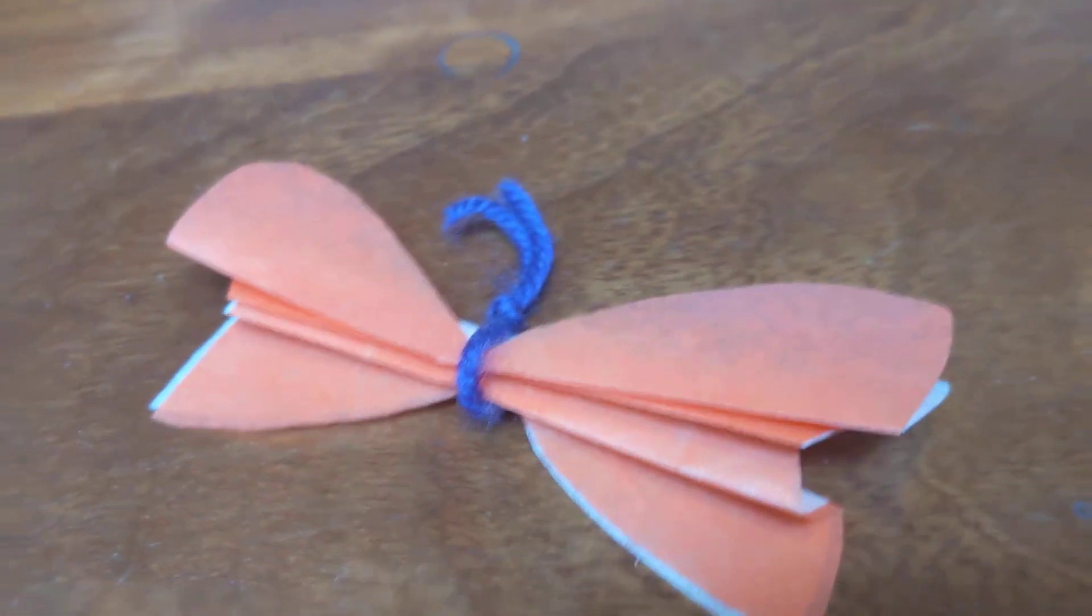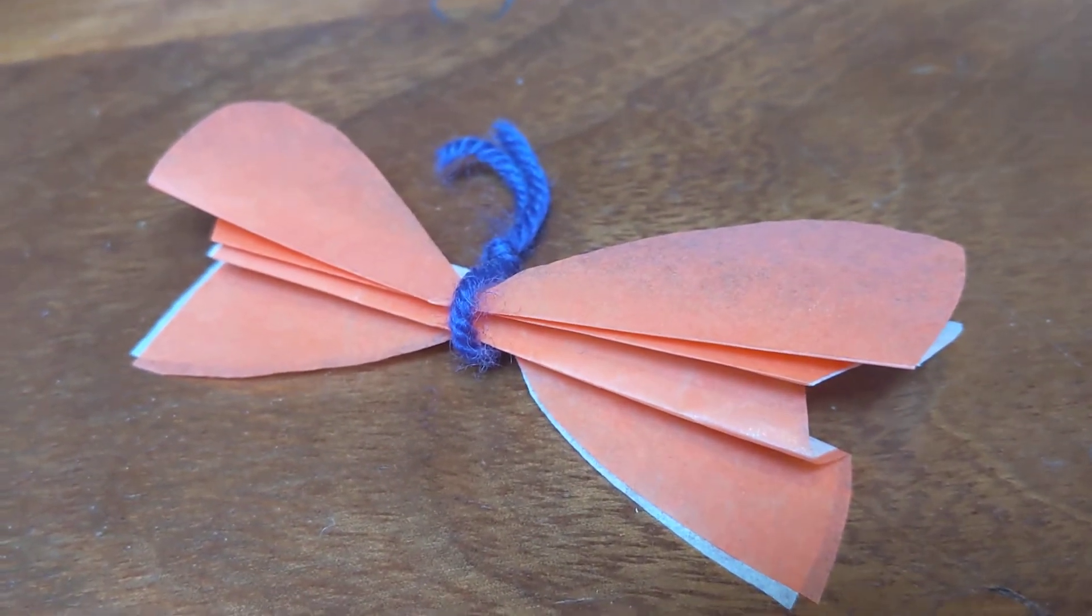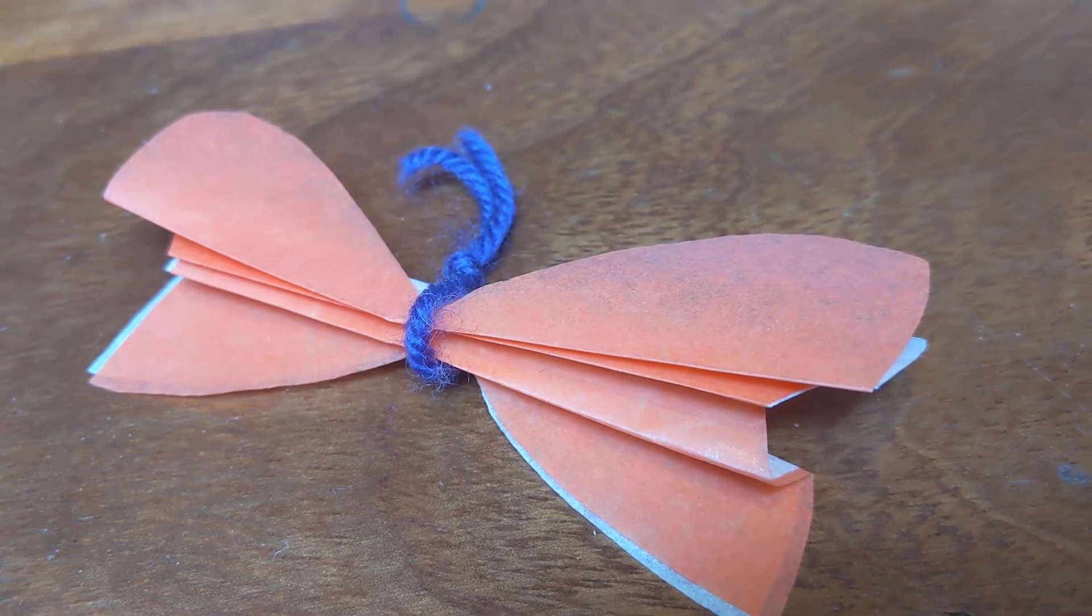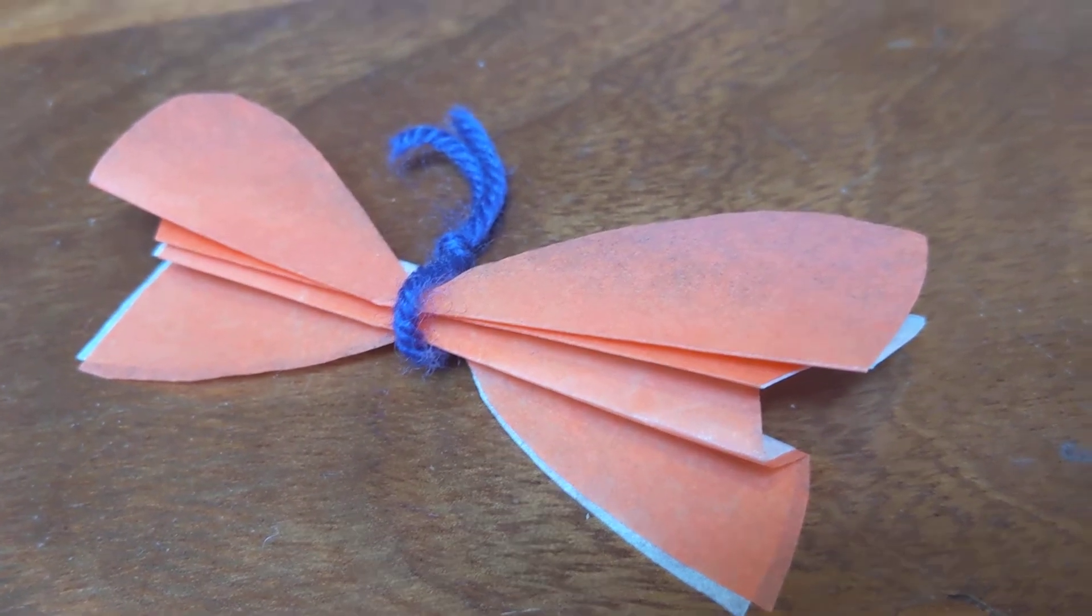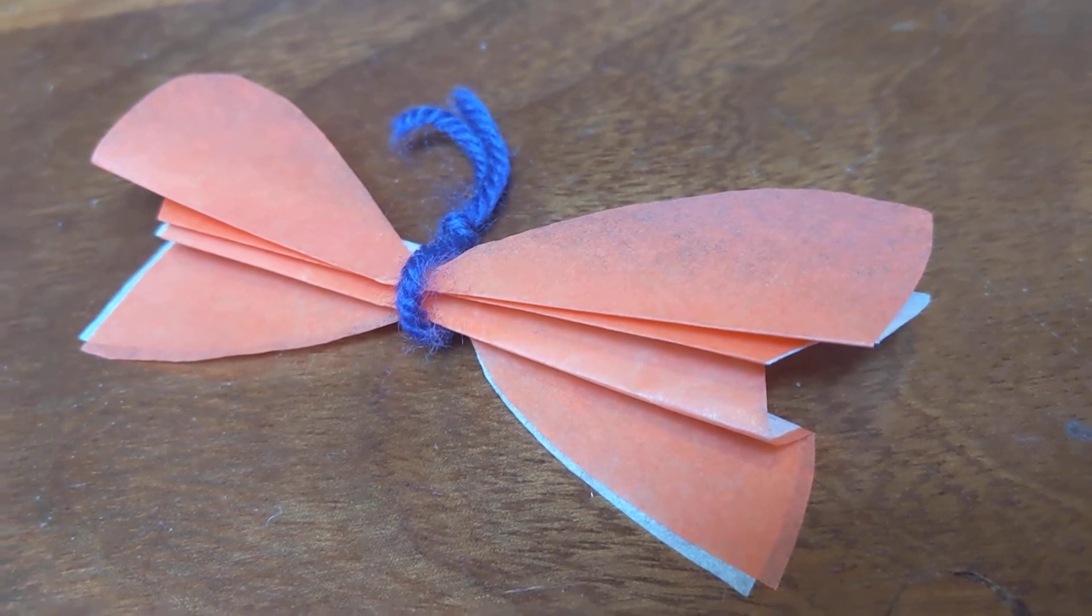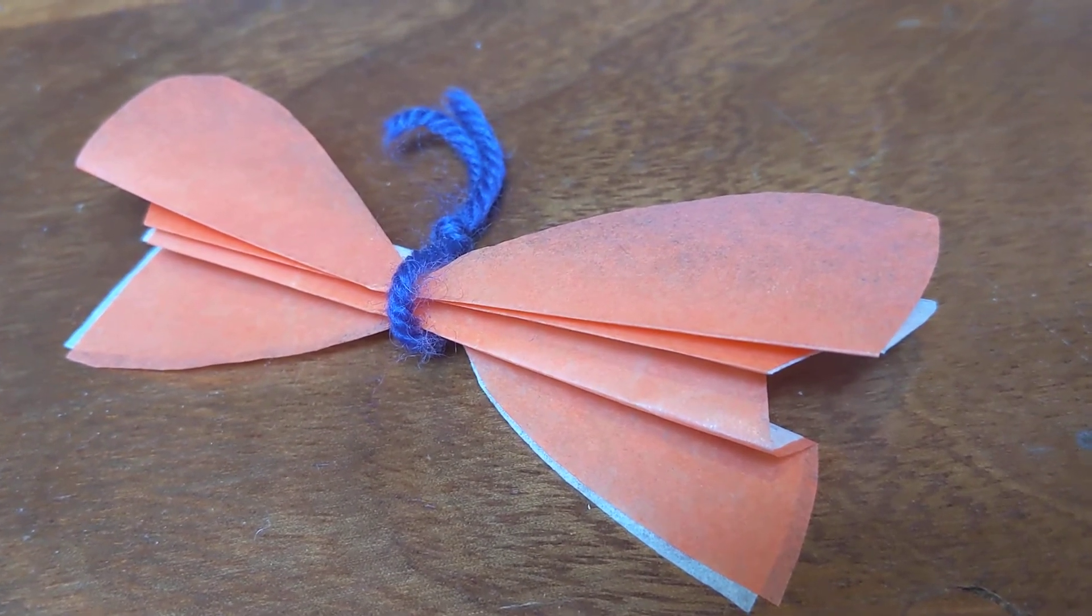Around the folds tie the wool. If you tie it in a knot where you put the two ends through, then you get the antenna. And then you can cut them off to a good shape.